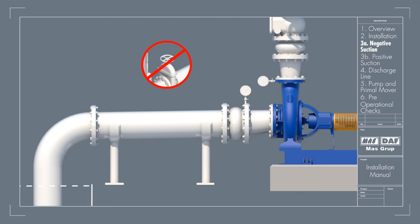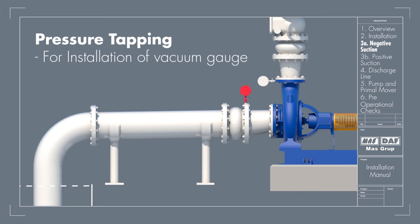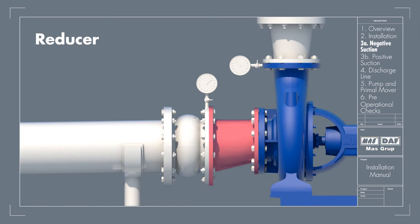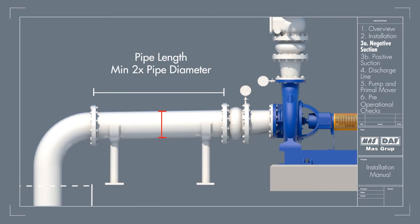No isolation valve is recommended. There should be a pressure tapping provided for installing a vacuum gauge in the suction line. The reducer joining the straight length of the pipe in the pump line should be an eccentric reducer with the incline side of the reducer as the bottom side. The straight length of the pipe after the eccentric reducer should be 2 times the pipe diameter.